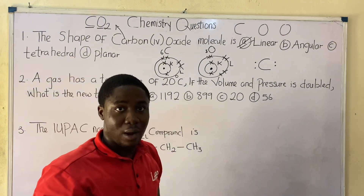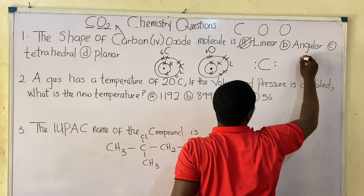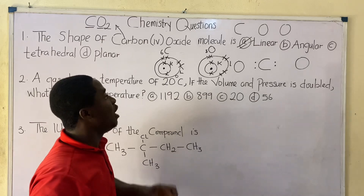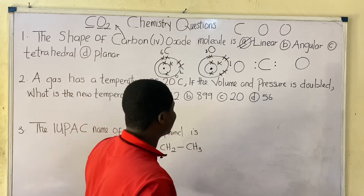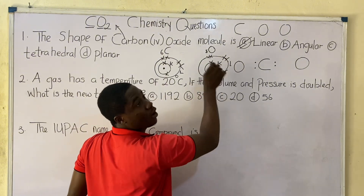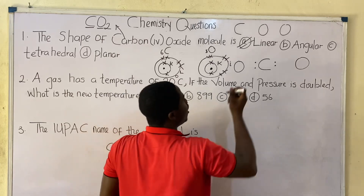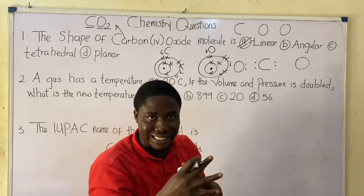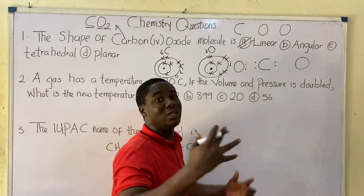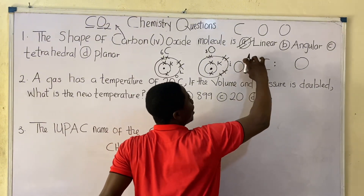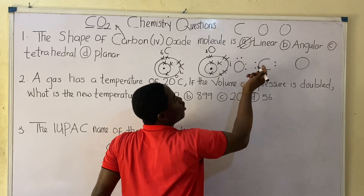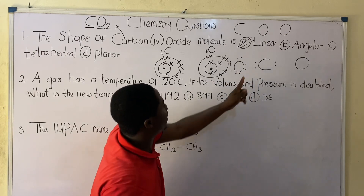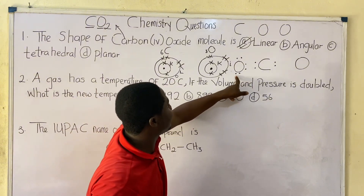Carbon has 4 electrons in the outer shell drawn around it. We then place one oxygen atom on each side of the carbon. For one oxygen atom, there are 6 electrons in the outer shell. We place 2 electrons on the bonding side, and distribute the remaining electrons — 2 here and 2 there — completing 8 electrons for that oxygen.